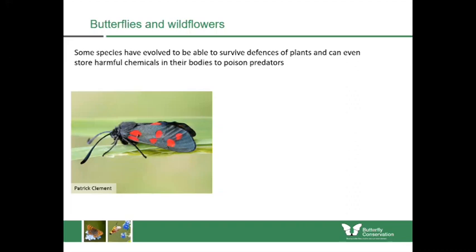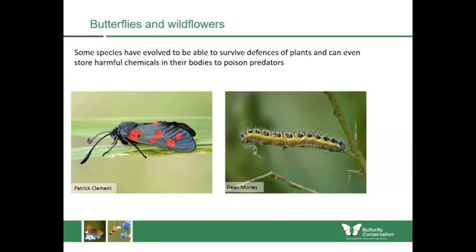Others have evolved to actually use plants in certain ways. The six-spot burnet moth eats certain plants which give it poisons it can use in its body to poison predators — that's why it's so brightly coloured. The black and red appearance tells predators to stay away. The large white butterfly, which feeds on cabbages or kale, can also use the mustard oils from those plants to make itself taste really bad and potentially harm predators too.